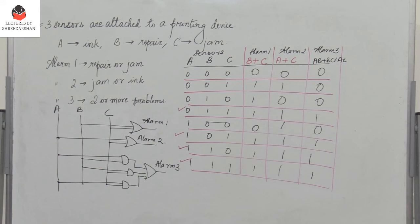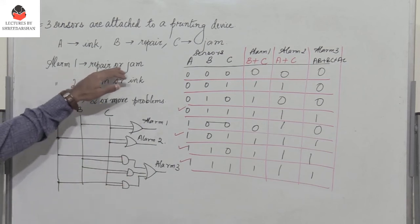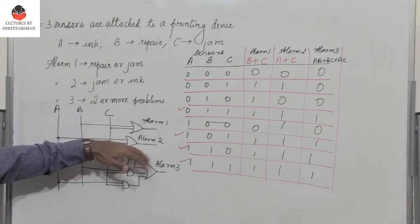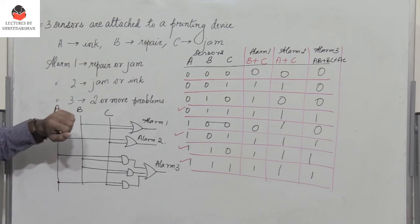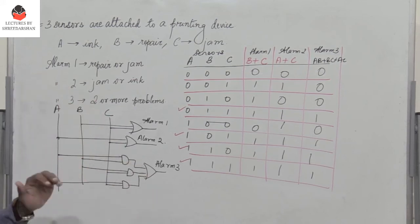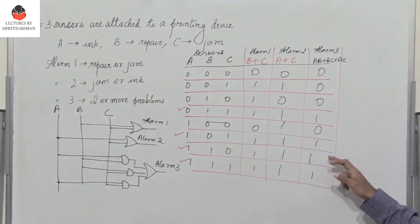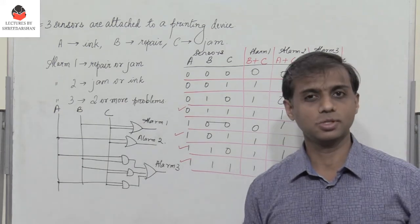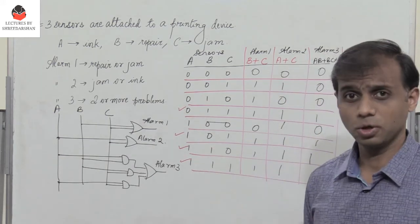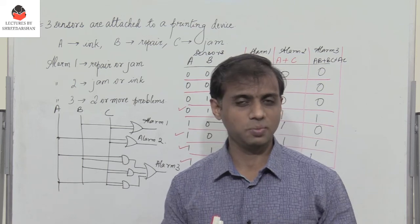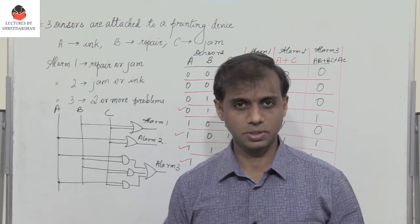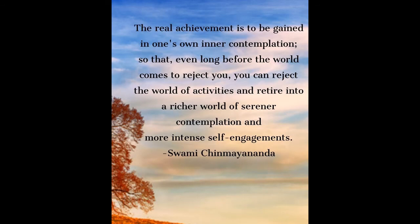So alarm 1 goes high if the printer needs repair or needs to be jammed. Alarm 2 goes high if the printer needs to be jammed or has a shortage of ink. And alarm 3 sounds if there are two or more problems. The simplified expression for alarm 3 was obtained using a K-map. This was an interesting problem — we will take another interesting problem in the next video segment. Do not forget to like, share, and subscribe, and press the bell icon for notifications. Click the i button or go through the Digital Electronics playlist to view all related videos. Thanks for watching.